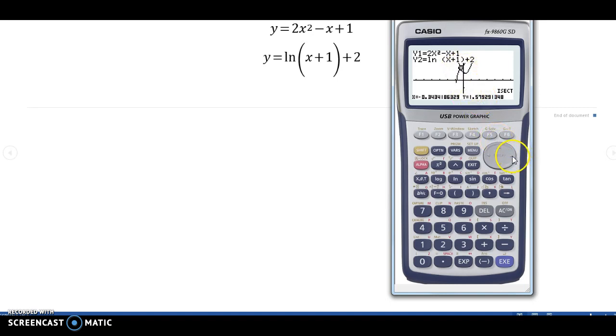This is one intersection, and now you move with this arrow, and you have the other interception in x being 1.23, and y being 2.8.